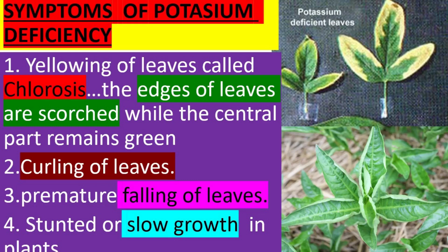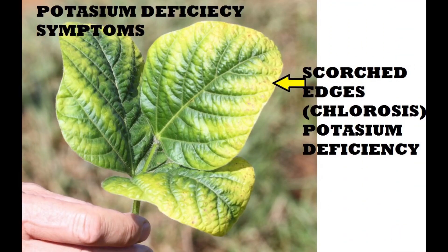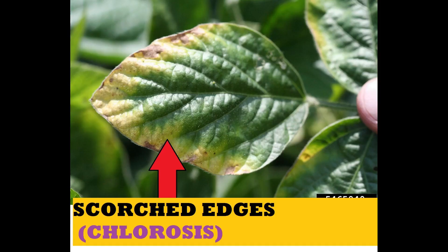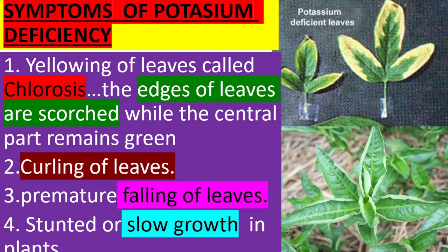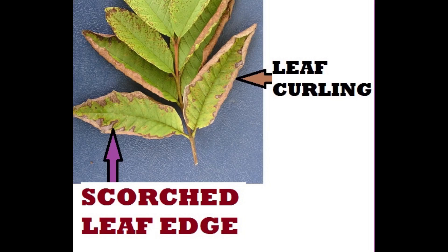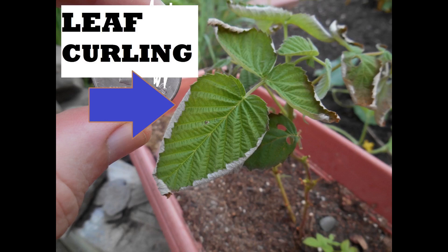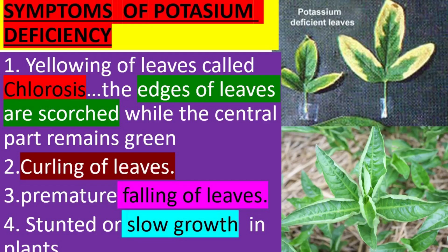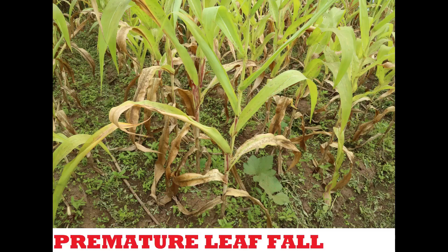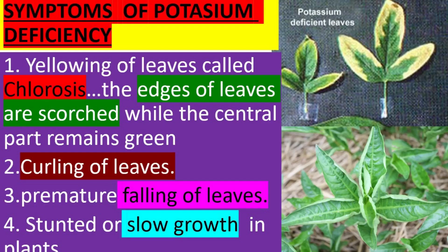Symptoms of potassium deficiency: one, yellowing of leaves, called chlorosis — the edges of leaves are scorched while the central part remains green. Two, curling of leaves. Three, premature falling of leaves. Four, stunted or slow growth in plants.